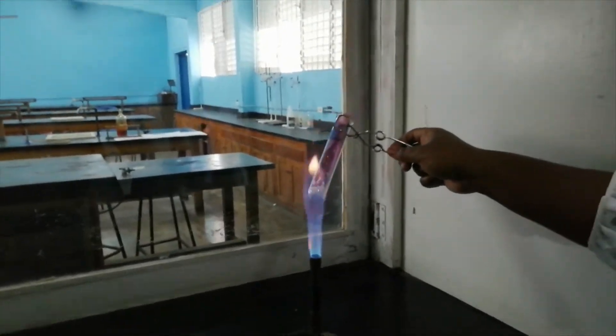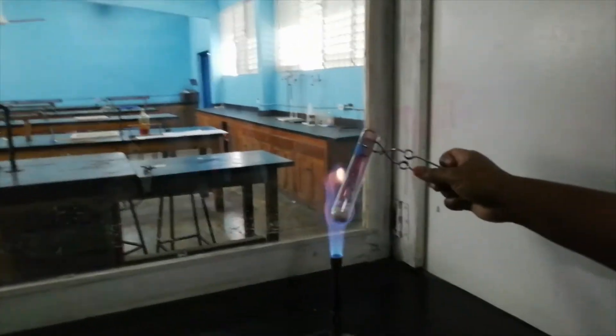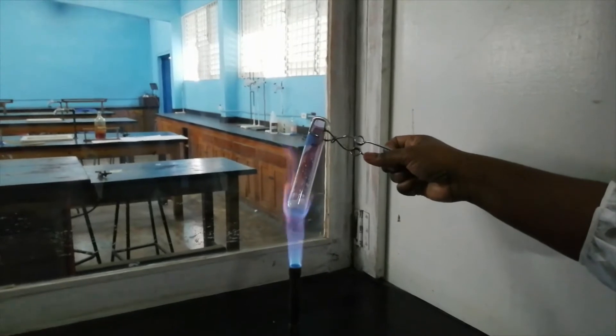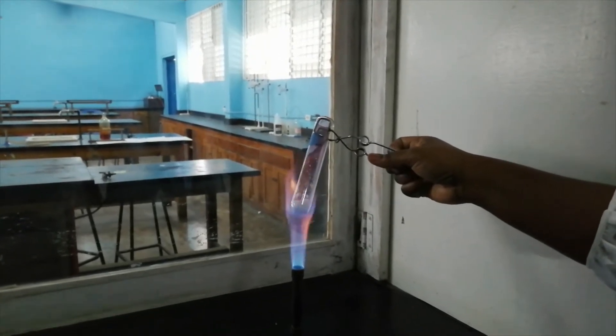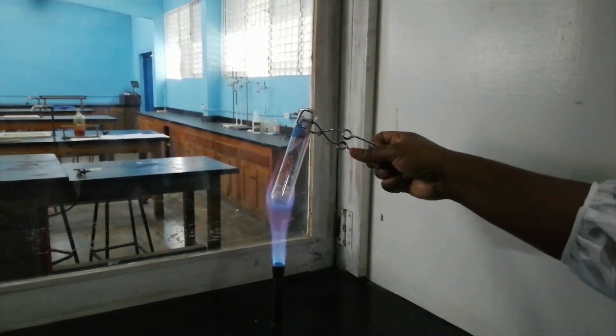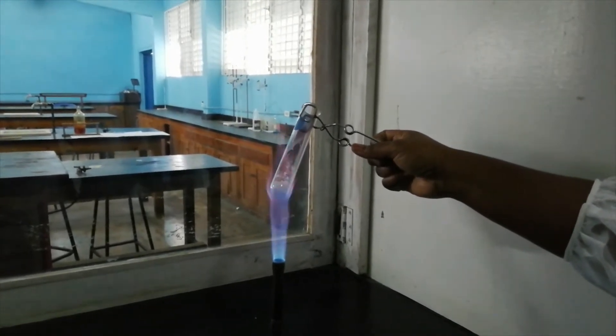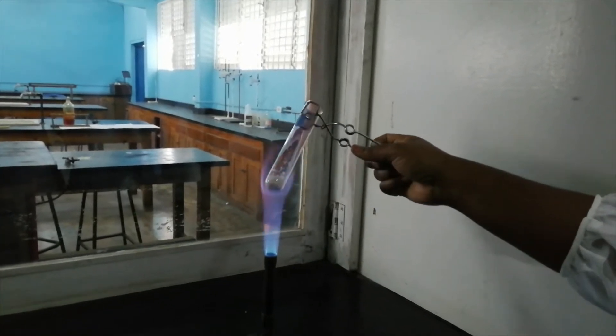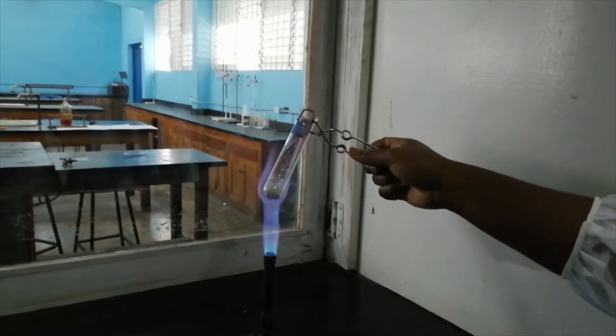So remember this separation is based on differences in melting point and also boiling point. So from this, you can infer that the sodium chloride has a higher melting point and boiling point than the iodine, which is why the iodine now is basically vaporized.